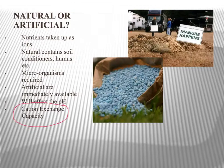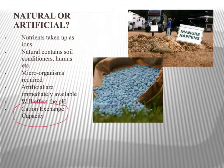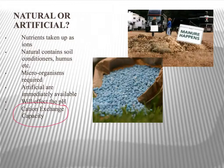The higher the cation exchange capacity, the higher the ability that soil has to provide those nutrients to the plants. Something like a clay soil, which has a very high surface area to volume ratio — a product of the fact that it's got lots of tiny particles as opposed to just a few large ones — will have a very high cation exchange capacity. A sandy soil will have a very low cation exchange capacity. You also have problems with soil structure and soil texture, but that's the subject of a different screencast.